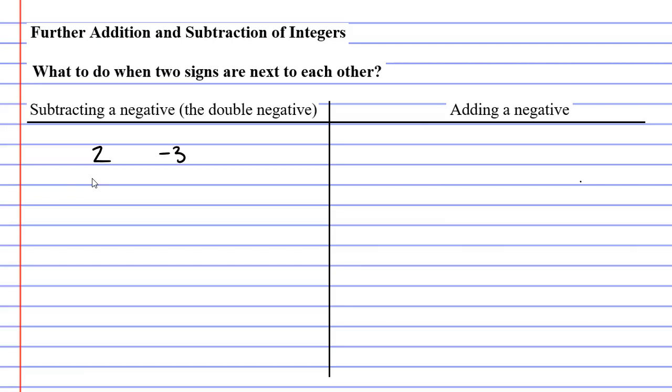And what we're going to do is we're going to put the subtraction symbol between these two numbers, so we're going 2 minus negative 3. And it's important that we remember that these two signs here are quite different. One is the subtraction sign, and the other one is the negative sign, because that is negative 3 there.